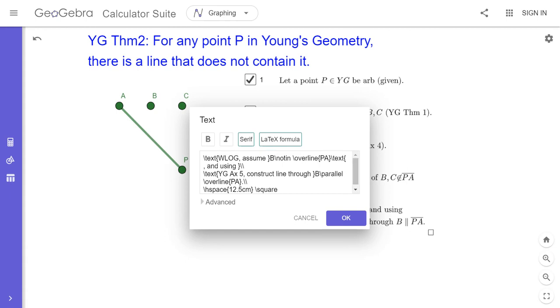So, look, this is ugly, right? But you can see that I'm using the text for all of this, right? And then I have the B not in the line segment PA. And then I have text.